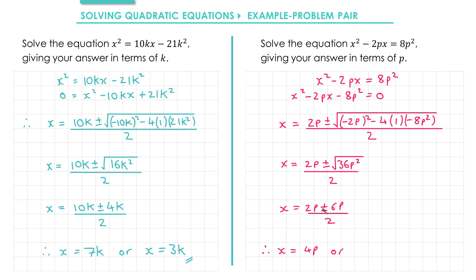If we do it with the minus, we get 2p minus 6p, which is minus 4p divided by 2, gives me x equals minus 2p.